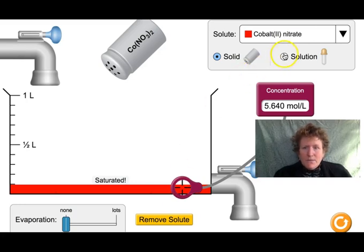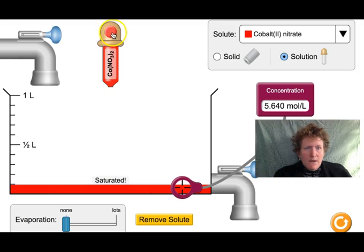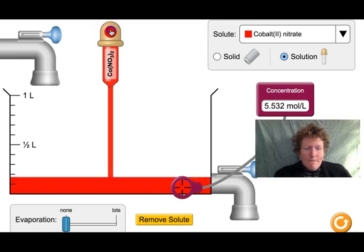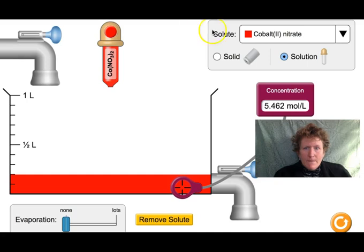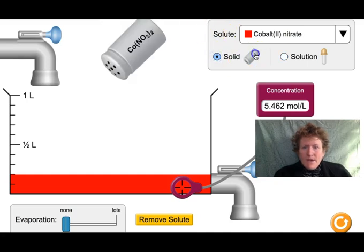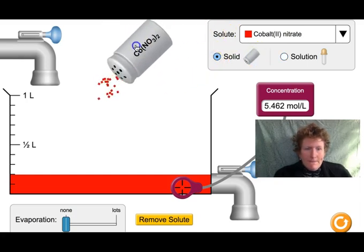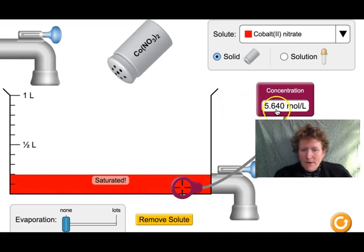Record our data. And then switch back to solution. Go up to 0.2 of a liter. Add more solid until it's saturated. And then look at the concentration again. So make sure you write down your data and keep filling out that data table in part three and eventually make a graph. Thanks so much.